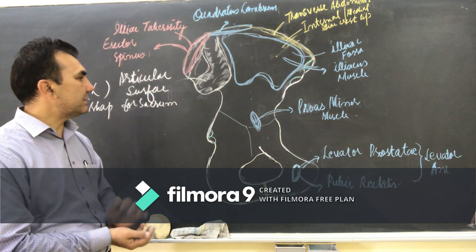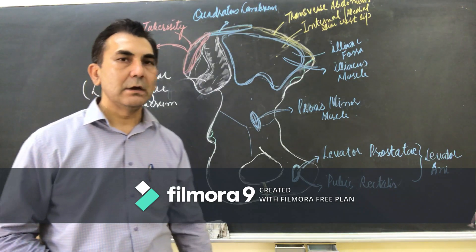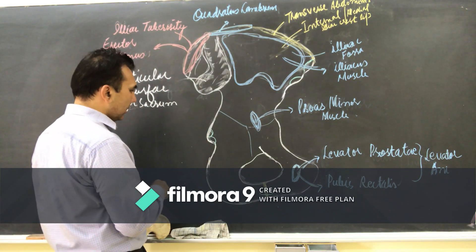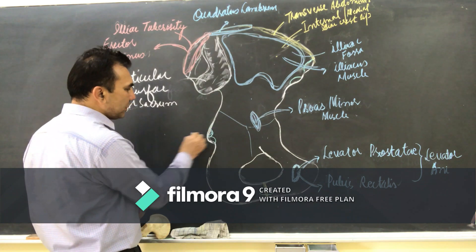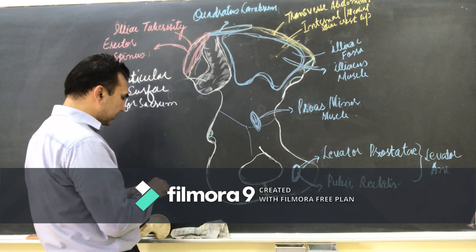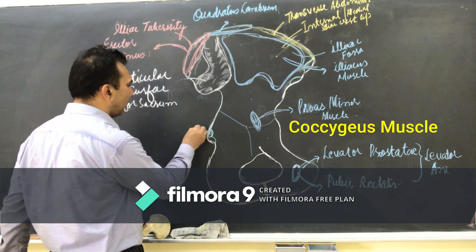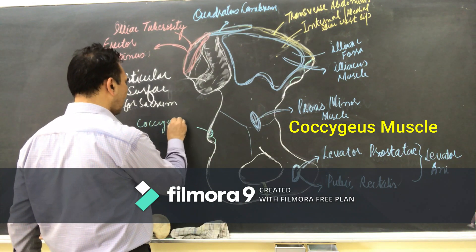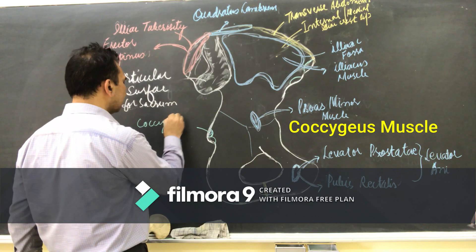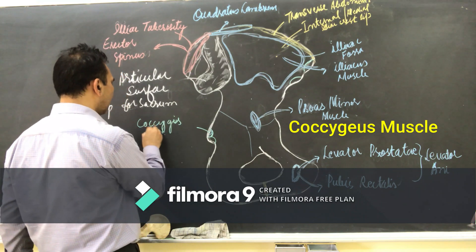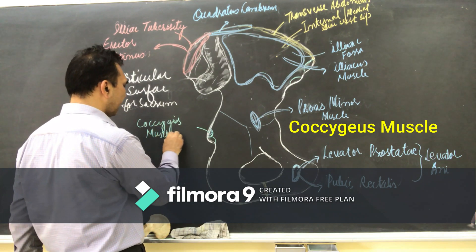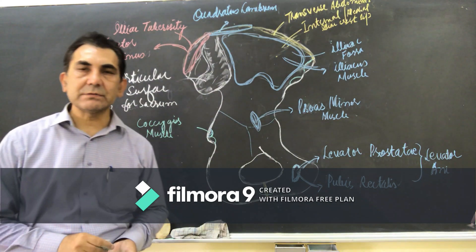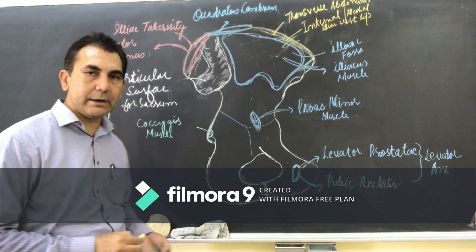On the ischium bone, the posterior side of the ischium bone is for the attachment of the coccygeus muscle. Additionally, the rectus femoris muscle is also attached in this area.